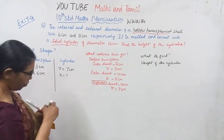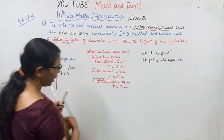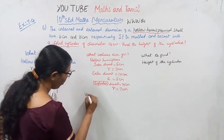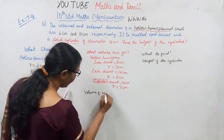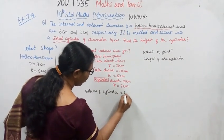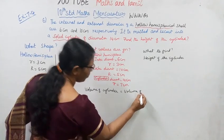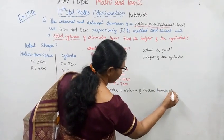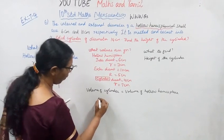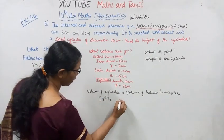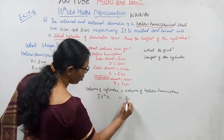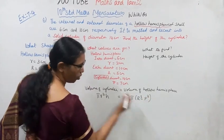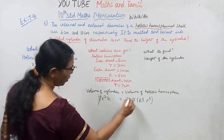What is the height of the cylinder? The volume of the cylinder equals the volume of the hollow hemisphere. Volume of cylinder formula: pi r squared h equals volume of hollow hemisphere, which is 2 by 3 pi times (capital R cubed minus small r cubed). Pi cancels. Capital R equals 5.